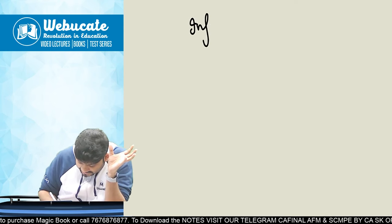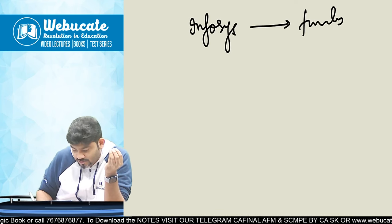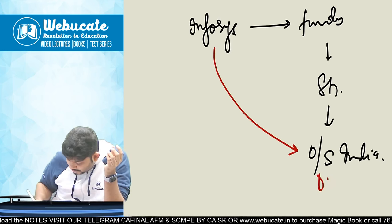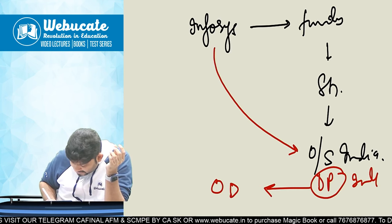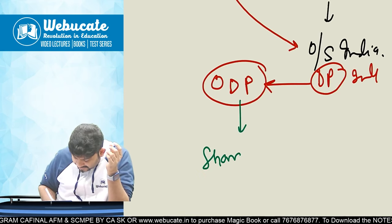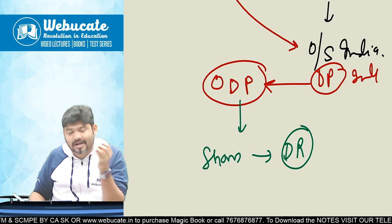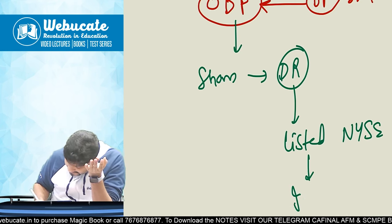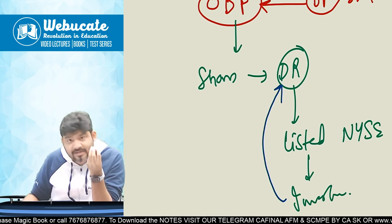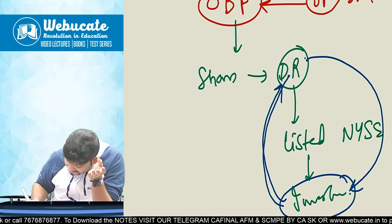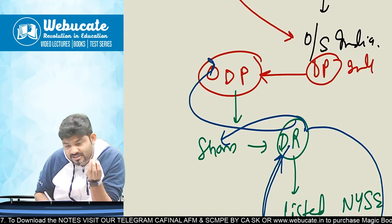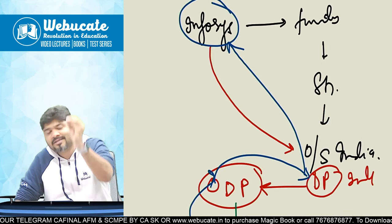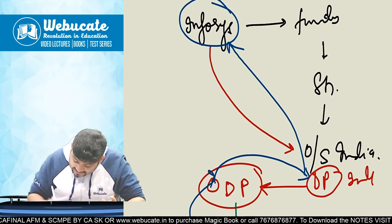Infosys wants funds, so it will issue shares outside India. Infosys gives shares to a local depository participant in India, which transfers them to the Overseas Depository Participant (ODP). The ODP converts shares to depository receipts, which are then listed in the stock exchange of that particular country. Local investors purchase shares through the depository receipts, pay money, which flows back through the ODP to the depository participant in India, and finally Infosys gets the money. If these depository receipts are issued in America, it is ADR; otherwise it is a GDR.